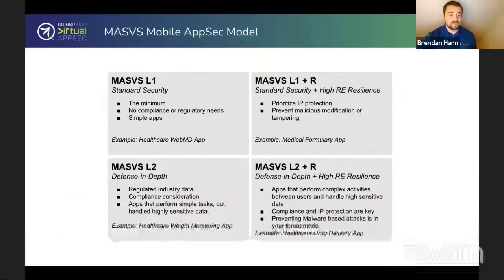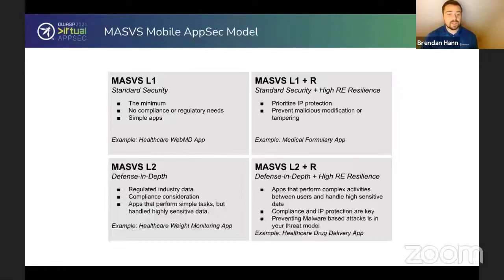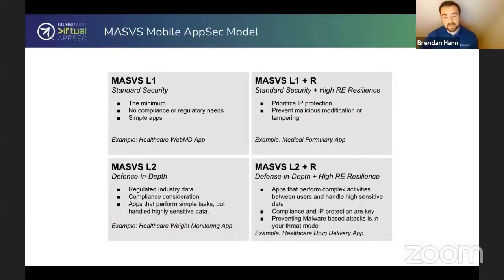One of the things the MASVS does is create clear tiers for different types of apps. MASVS L1 is the minimum security requirement — it's best for apps that have no compliance or regulatory needs and are more simple applications. We'll use healthcare examples for each tier. An example of an L1 app is something like a WebMD search app. If you're building an app like that, you'll need to achieve at least MASVS L1 security levels.